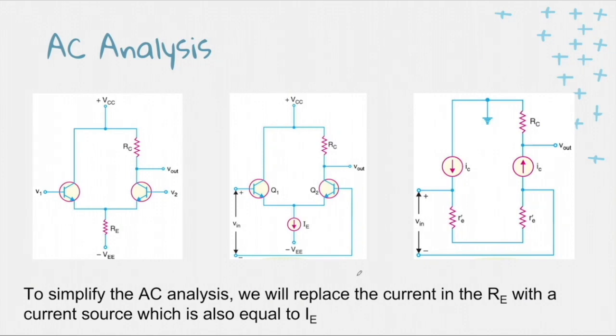Let's go to the AC Analysis of the BJT Differential Amplifier. To simplify the AC Analysis, we will be replacing the current in the RE with a current source which is also equal to IE.